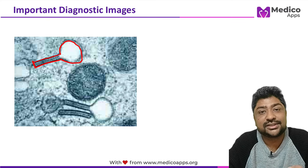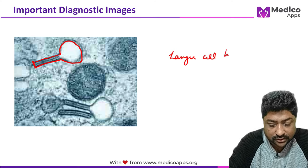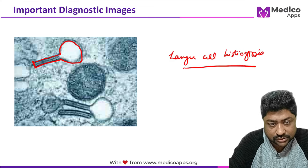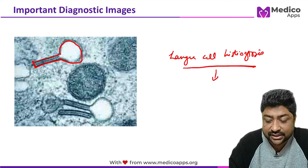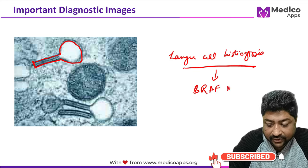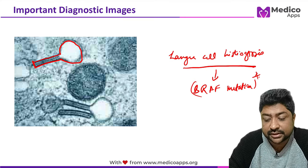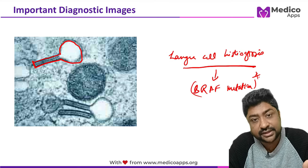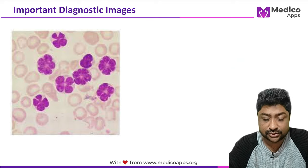The next image shows tennis racket cells, seen in Langerhans cell histiocytosis. An important question that has been asked is the associated mutation: BRAF mutation. This has been asked in past two to three years. Tennis racket cells are easy to identify.